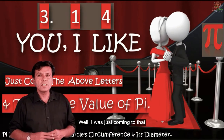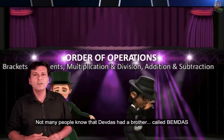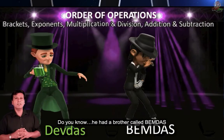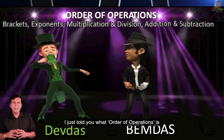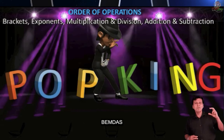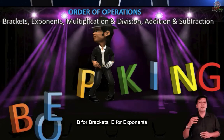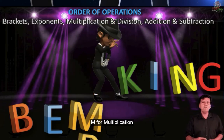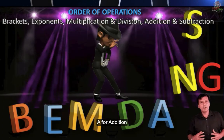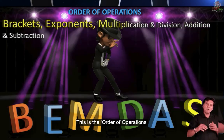But I was just coming to that. Not many people know that Devdas had a brother called Bemdas. He had a brother called Bemdas, and I have just told you what order of operations is. Bemdas: B for brackets, E for exponents, M for multiplication, D for division, A for addition, S for subtraction. This is the order of operations.